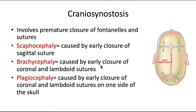Brachycephaly is caused by early closure of the coronal and lambdoid sutures. These two horizontal sutures are prematurely closed, so the skull becomes elongated superiorly and inferiorly — it grows vertically, too tall. Plagiocephaly is caused by early closure of the coronal and lambdoid sutures on just one side of the skull, resulting in asymmetric distortion of the skull.